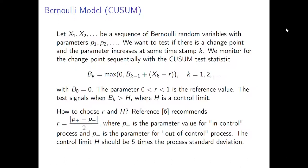The reference value r is chosen as half the distance to the so-called out-of-control parameter value. The control limit h should be about five times the process standard deviation. The performance of this method relies heavily on the choice of r and h, and it should be tailored for each case specifically.